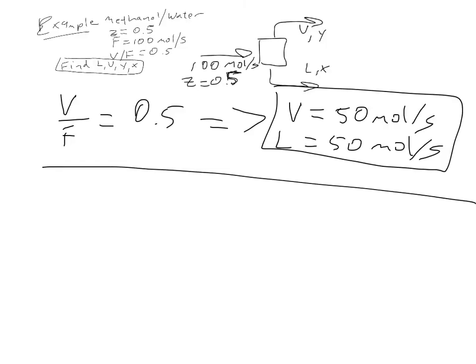In this case, f equals V over F equals 0.5. That was given in the problem. Our operating line equation is Y equals (1 minus f) over F times X, plus Z over F. That's our equation.